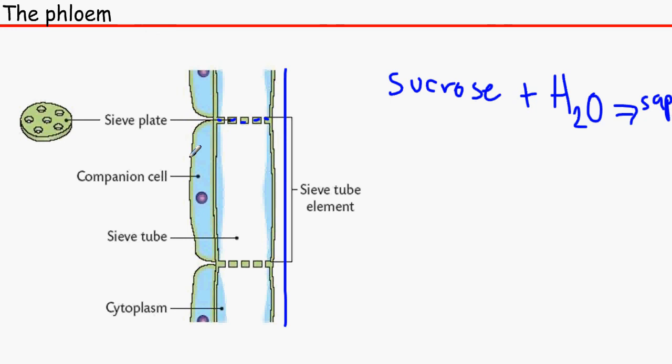And these two, the companion cells and the sieve tube elements, are linked through the plasmodesmata, which are gaps in between cell walls in which the sugars can go through.